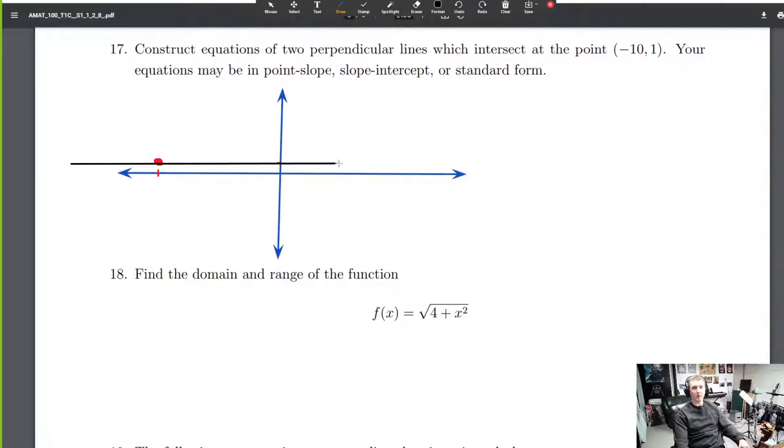We just need to make sure that we give two lines that are perpendicular and intersect at that point. So I'm going to pick this line and this line. A vertical line, although maybe that's a little tilted. A vertical line and a horizontal line. This one is x equals negative 10. Right?